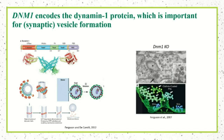Dynamin-1 is highly expressed in the nervous system and is important specifically for synaptic vesicle formation. If you lose Dynamin function and look at your synapses, you have synaptic vesicles that are malformed, you don't have enough of them, you get buildup of intermediate steps in endocytosis, and you have synaptic dysfunction. That's the basic function of Dynamin.